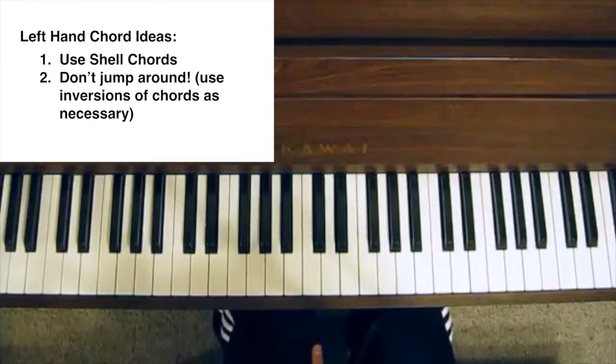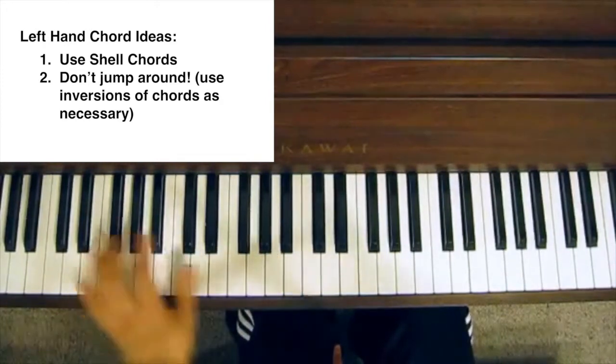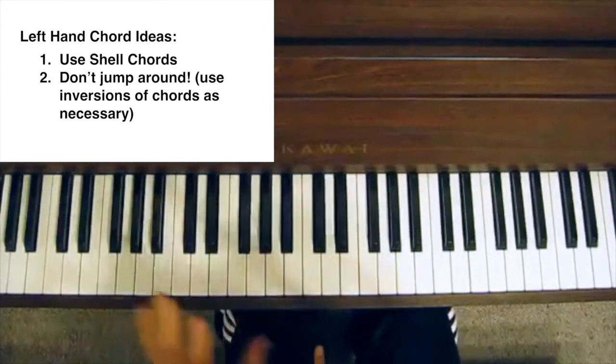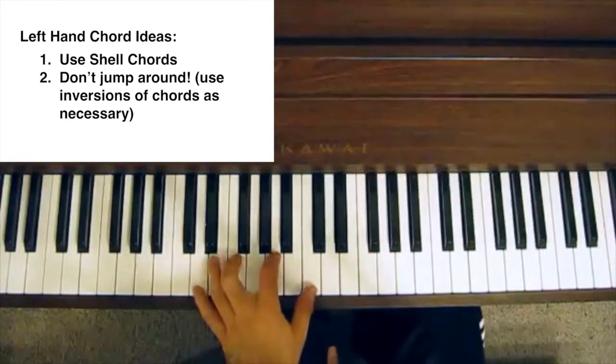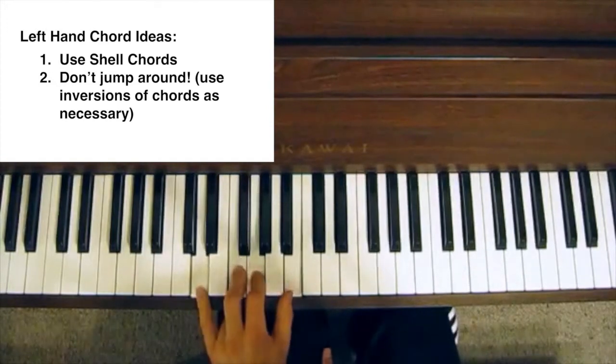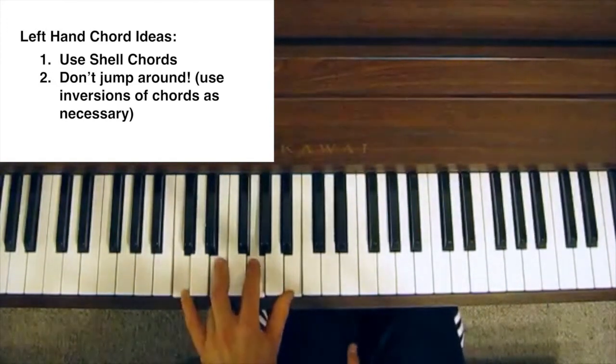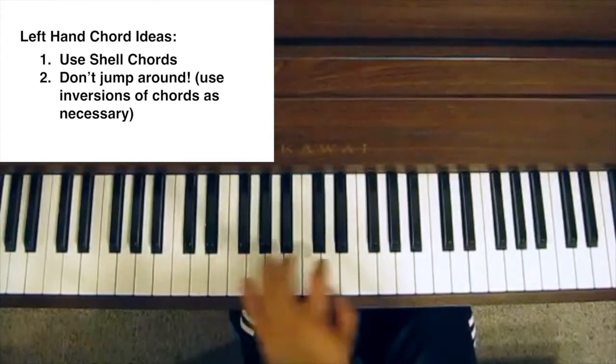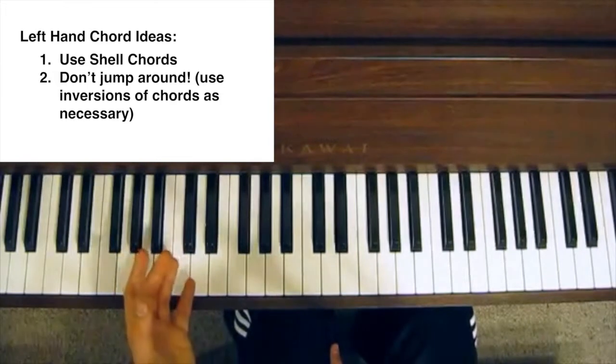Now, the second key idea I wanted to cover is that you don't want to move around the piano too much when you're playing. So, something like this. You'll notice, like a 2-5-1, I'm playing a root position Dm7, a 2nd inversion G7, to a root position Cmaj7. So, I'm not playing root position for all of them.